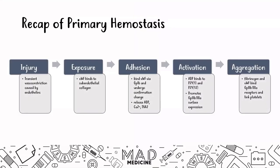Just a quick recap. You have several different components of primary hemostasis. You have injury of the blood vessel, which leads to transient vasoconstriction due to endothelins released by the endothelial cells. This injury leads to exposure of the subendothelial collagen. VWF binds to the subendothelial collagen, and that binding allows platelets to adhere to VWF and the subendothelial collagen via VWF binding with the GP1B glycoprotein complex on the platelet.